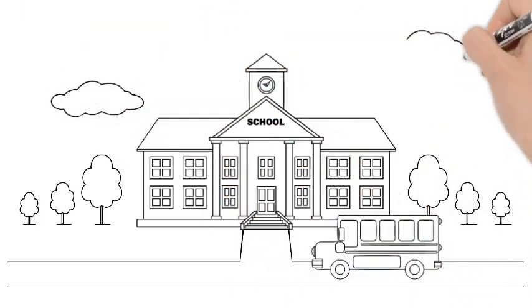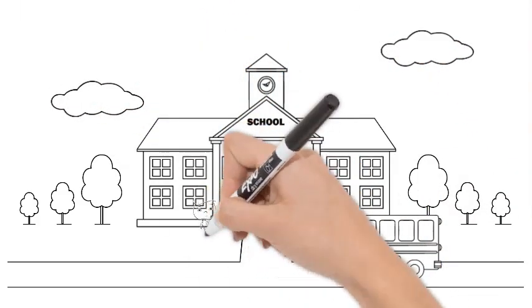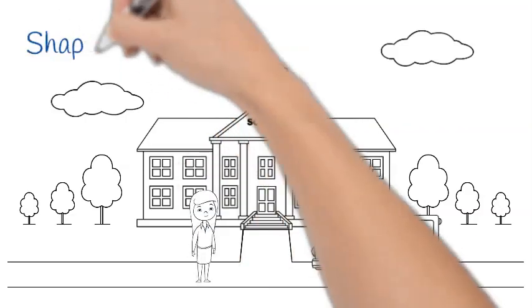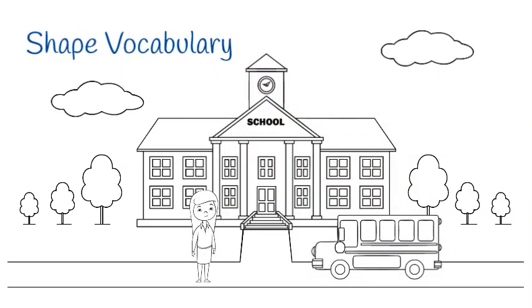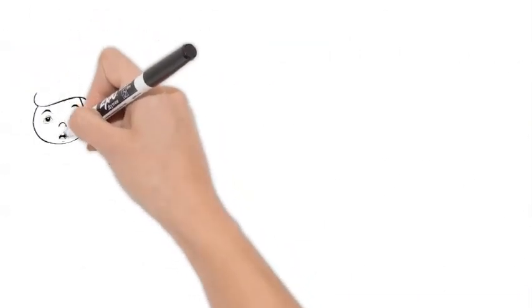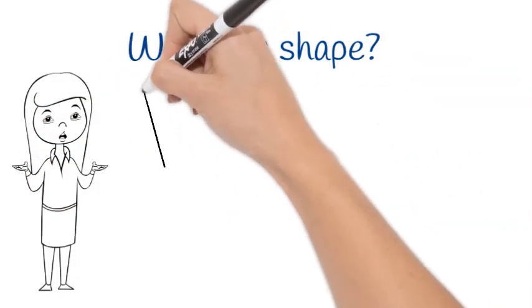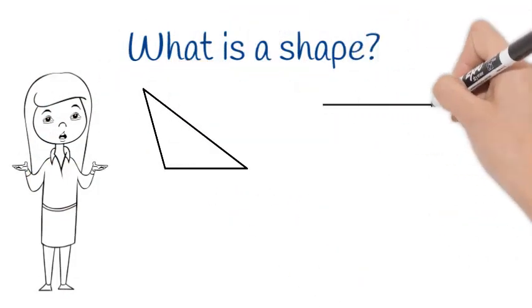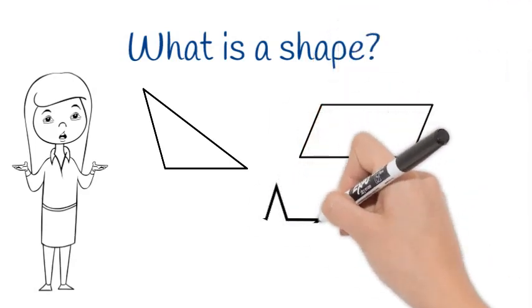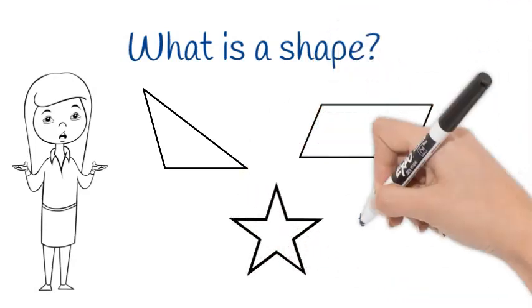Welcome to math. Let's learn shape vocabulary. What is a shape? A shape is the outline or form of an object.